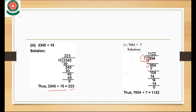We bring down 8. 7 times 1 is 7, and 8 minus 7 is 1. Next we bring down 5, making 15. 7 times 2 is 14, and 7 times 3 is 21. 21 is greater than 15, so we take 7 times 2 which is 14. 15 minus 14 is 1. We bring down 4 making 14. 14 minus 14 is 0. The answer is 1122.